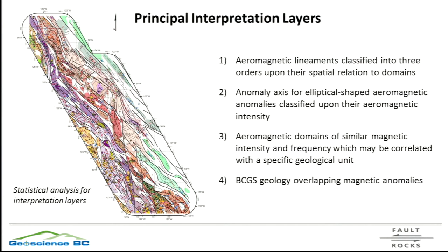The interpretation layers consist of aeromagnetic lineaments — the classic magnetite-destructive lineaments which bound domains of different intensity and frequency. Then another layer of anomaly axes, which are the axes of elongated elliptical-shape plan-view magnetic anomalies. Then a series of minor magnetic domains which we use to compare and correlate to the geological maps from the BCGS. The main data used for interpretation was the magnetic data, mainly because of the resolution available, and we fed that interpretation with the gravity data.